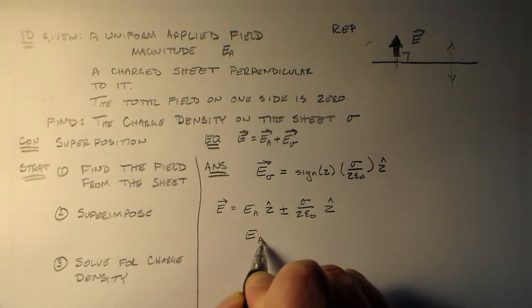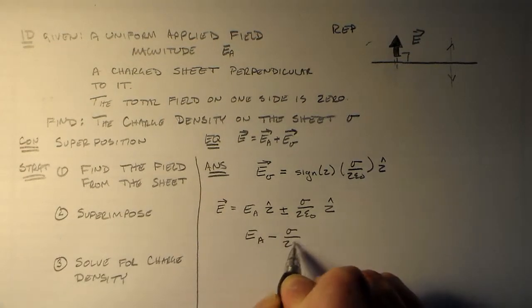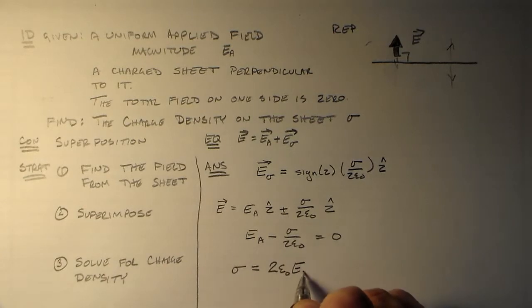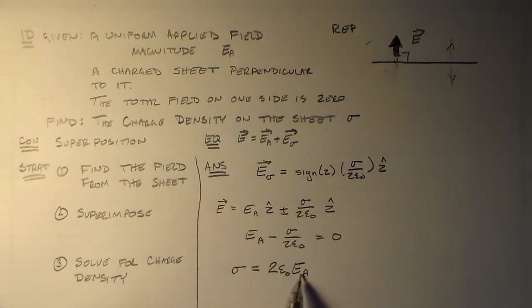So if we're going to cancel at that point, that means that EA minus sigma over two epsilon not is equal to zero, right? And then we just have to try to solve for the charge density, which is going to be one of our more complicated events, two epsilon not EA. And that's all we need to do, okay?